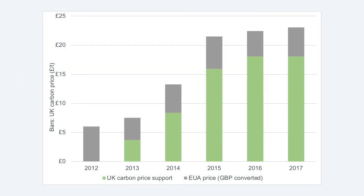The effectiveness of carbon pricing has been clearly shown in the UK over the last few years. The carbon price for power generation in the UK is made up of two components. The first is the cost of buying allowances under the EU's emissions trading system, shown here by the grey bars on the chart. However, these prices have been too low to reduce emissions very much on their own. The second component is the UK's own carbon tax for the power sector, called carbon price support, shown by the green bars. This has increased a lot in recent years, increasing the total carbon price.